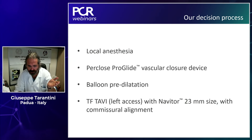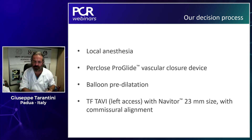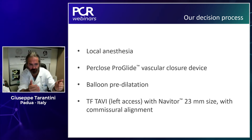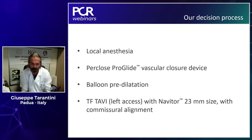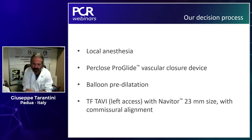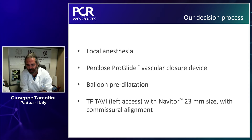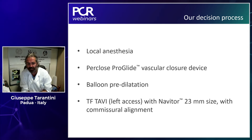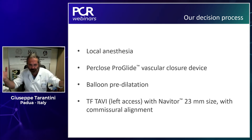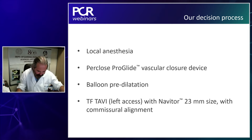Our decision process: local anesthesia with a very minimalistic approach — no anesthesiology, no surgeons in our room. We use two ProGlide sutures. We decided to go with balloon pre-dilatation and transfemoral approach via the left access. We want to use a Navitor 23 mm. In this case, we have a small annulus, which we can discuss. The goal was to go with commissural alignment for the lifetime patient strategy.